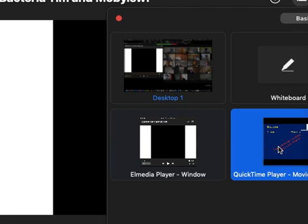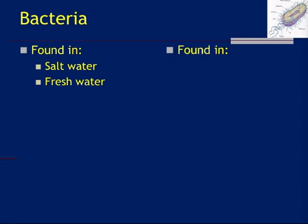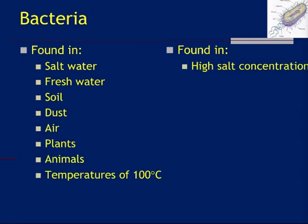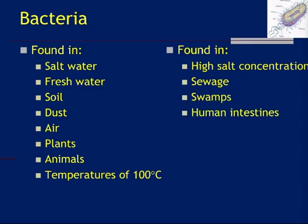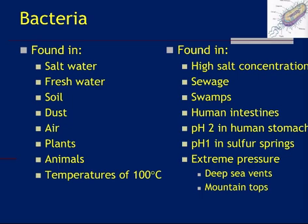In terms of where bacteria are found, they're found anywhere you can think of: salt water, fresh water, soil, dust, air, plants, animals, temperatures of 100 degrees in deep sea water vents or volcanoes, high salt concentration, sewage, swamps, human intestines, in your stomach at pH 2, in sulfur springs, thermal pools like those in Yellowstone, Iceland, and New Zealand, extreme pressure at the bottom of the ocean, and mountain tops. Obviously if you can find them and want to identify them, you have to be able to grow them.